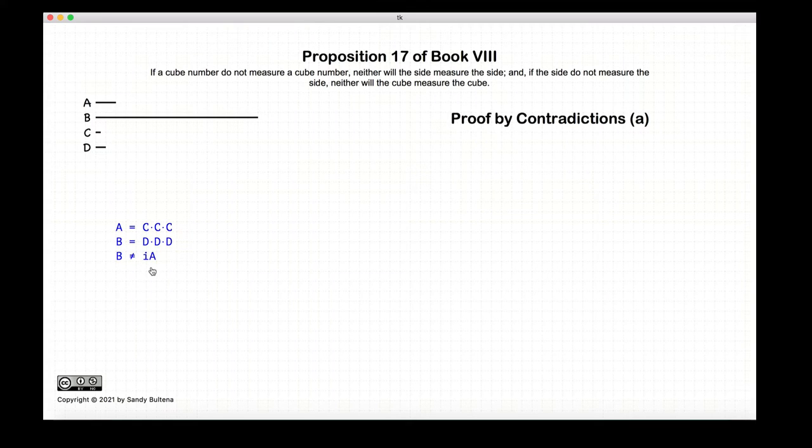To prove this, we start with the first part of the proposition which states that A does not measure B. Those are our initial conditions and we are going to prove this by contradiction. So we assume that C measures D.